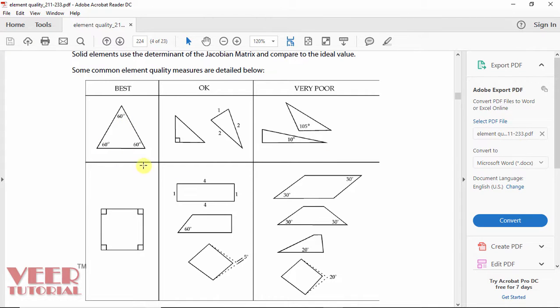In case of tria element, if we have an equilateral triangle, this is the best type of element. When the angle is 60-60 degree. In case of OK, we have one element that is 90 degree and then we have isosceles triangle like this. Very poor meshing is called when we have one angle is very high or another angle is very low. Like in case of this, one angle is 10 degree, one angle is 105. So this is a poor type of meshing. We have to avoid this type of meshing element.